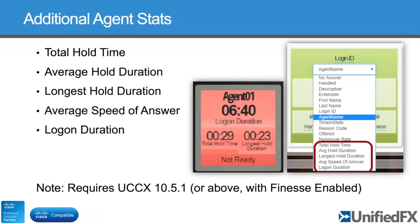If you're for some reason still on an older version of UCCX 10.5 and you have not transitioned to Finesse yet, from our software's point of view you would need to be on a Finesse-enabled version of UCCX. The good news is the CTI connection is consistent on any version of UCCX. Basically, it's just for these extra parameters — they'll only become available if you're on a Finesse-enabled UCCX instance.